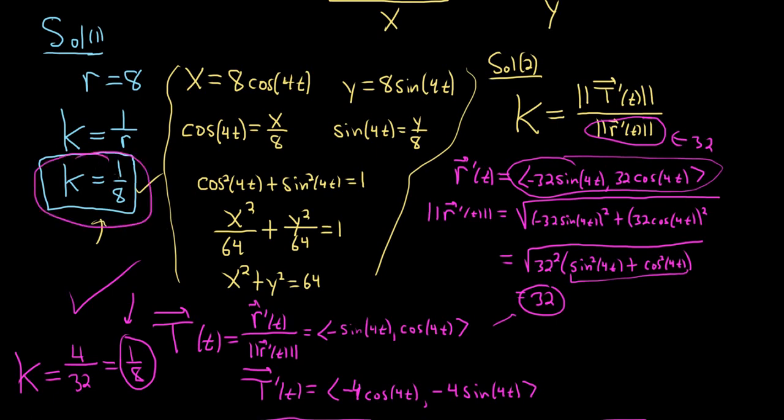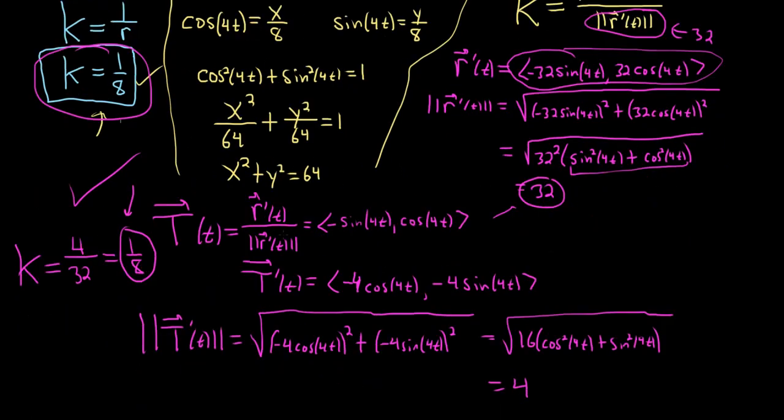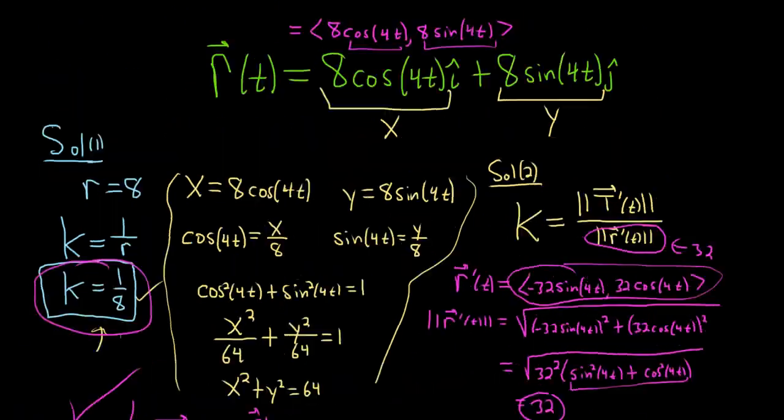So obviously, solution 1 is the way to go. So just keep in mind, if you see something like this and you can recognize that it's a circle, go for it. Basically, when you have a cosine and a sine, and these numbers are always the same, like 7 and 7, 2 and 2, 8 and 8, it's going to be a circle. So I hope this video has been helpful. Take care.